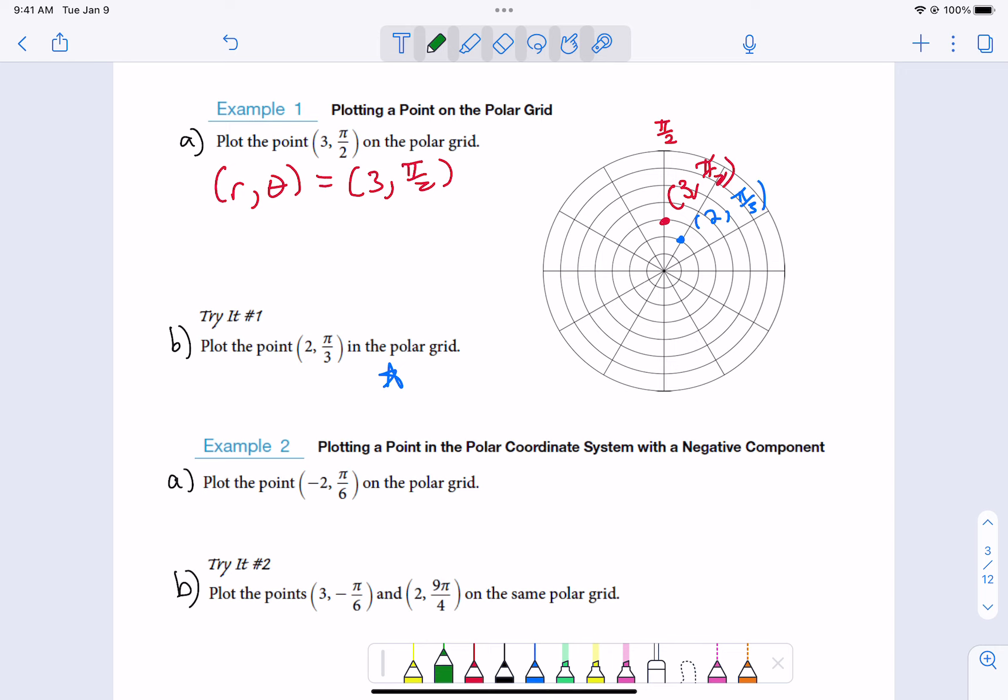This is the first time we have seen negative 2 pi over 6. We are going to go on the pi over 6 line, that's 30 degrees. But instead of going forward 2, all you do is go backwards 2. And so we would land right here. We go on the pi over 6 line, the 30 degree line, and instead of going forward, we go backwards. That's what it means to be negative. It's more directional than anything else.